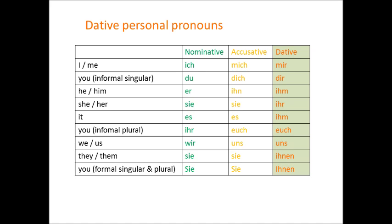Notice that in the dative, the German word for her — ihr — finally becomes different from the German word for them — ihnen with a lowercase i — and Sie formal — Ihnen with a capital I. In the nominative and accusative, all three of those words are simply sie every time. However, in case you were thinking that personal pronouns were going to be easier to tell apart in the dative: the word for him and the word for it become the same, as both of them are now ihm.